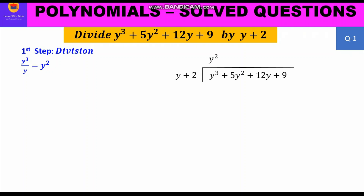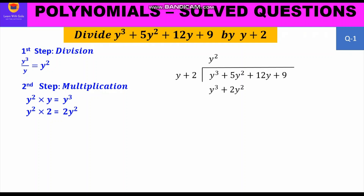Now we move to the second step — multiplication. We multiply the quotient term y² by each term of the divisor y + 2: y² × y = y³, and y² × 2 = 2y². We write this product just below the first two terms of the dividend, ensuring like terms fall below each other.